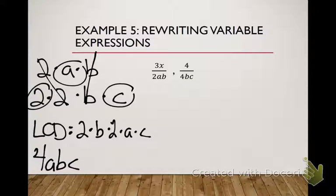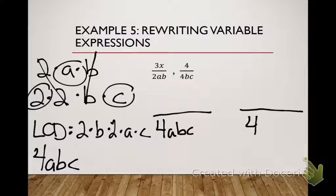Okay, so I've got two fractions over here. 4ABC and 4ABC. So how do I get from 2AB to 4ABC?